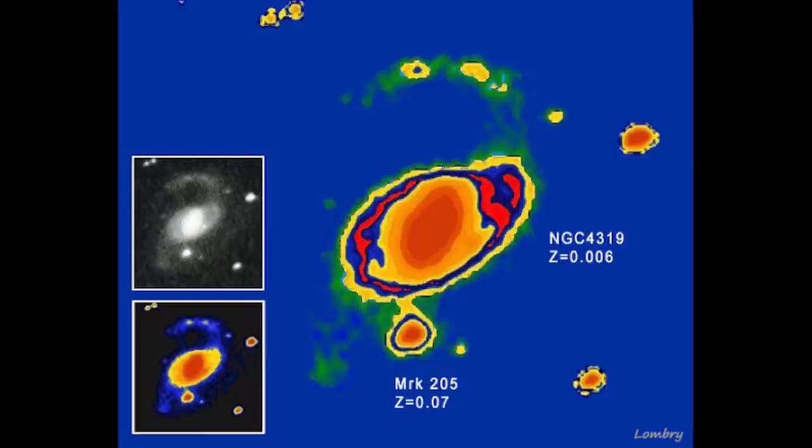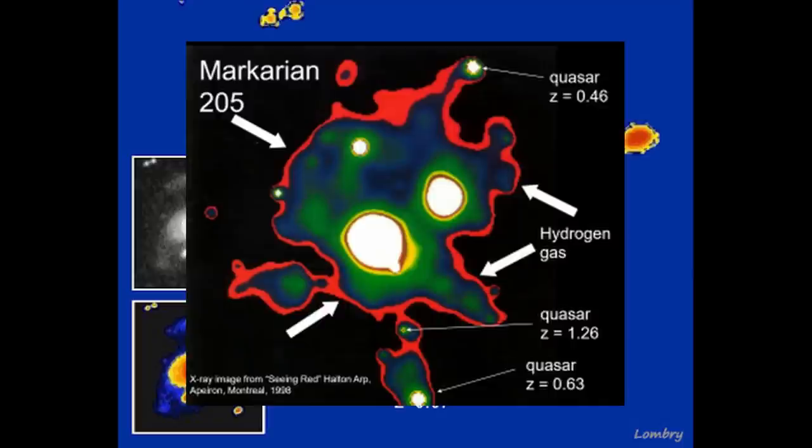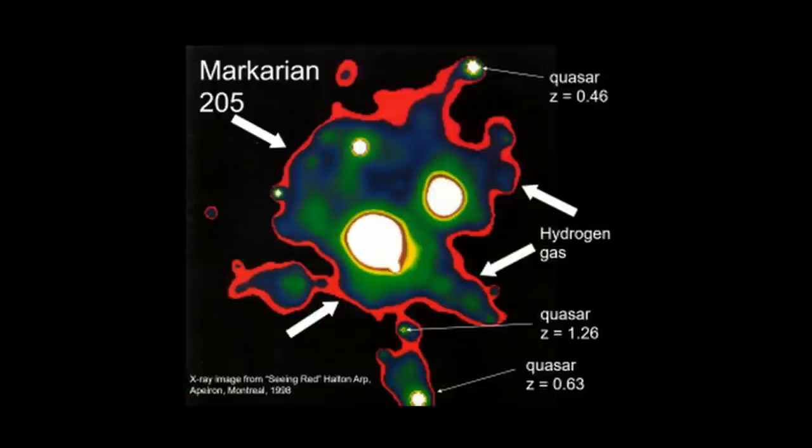More interesting is when they examined the area between NGC 4319 and Markarian 205 in X-ray it showed up two X-ray filaments coming out either side of Markarian 205 and ending on point-like X-ray sources. When these points are seen in optical it reveals two bright blue stellar objects. And these have redshifts of 0.67 and 0.46 and are seemingly linked by this X-ray filament.